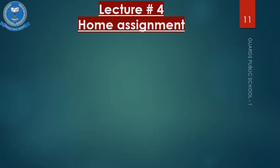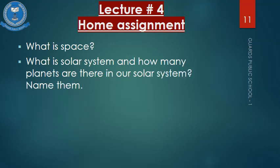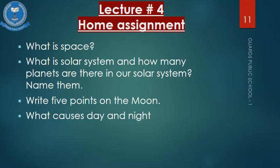Lecture 4 home assignment question answers: Question 1 — What is space? Answer is easily available in the lecture. Question 2 — What is the solar system and how many planets are there? Name them. Question 3 — Write 5 points on the moon. Question 4 — What causes day and night? All answers are easily available in the lecture. Thank you, beta.